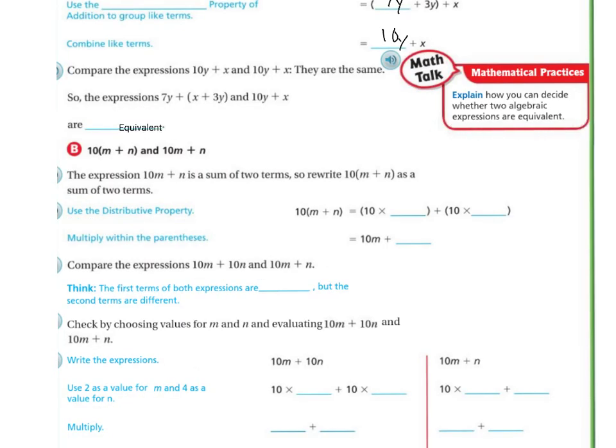The expressions are equivalent. Let's look at the next one. So we have 10, and then in parentheses, we have m plus n, and then we're also trying to compare it to this other expression, 10m plus n. So we're trying to see if these are equivalent.